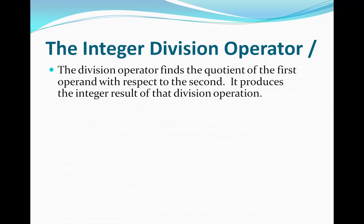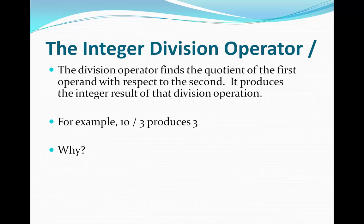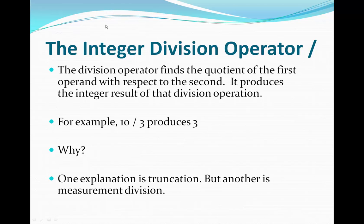In integer division, your result is always going to be an integer. One example of this is ten divided by three. In integer division, ten divided by three produces three. One explanation for this is truncation — you would do the division the normal way, think of how to fairly share ten things split three ways, and you would get some fractional value, and you would then truncate the fraction off of that value.